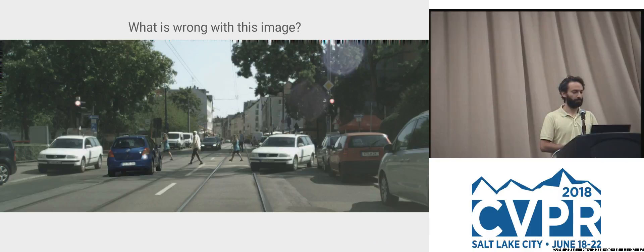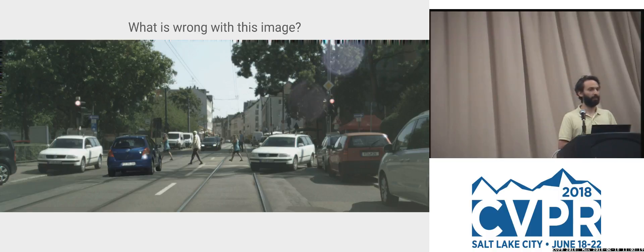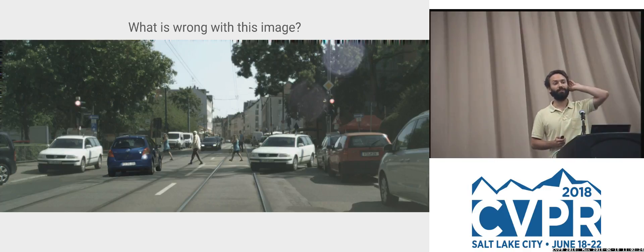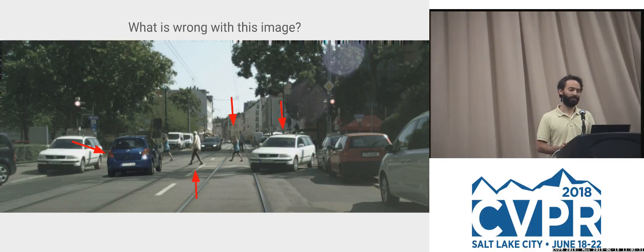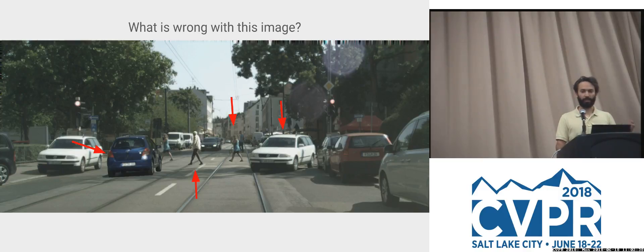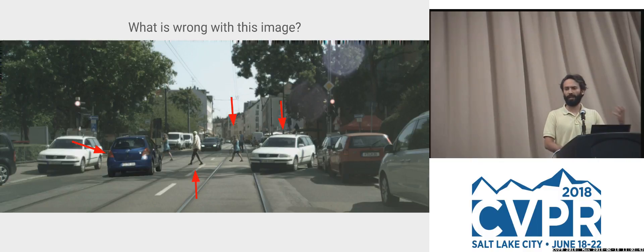Can someone spot something off with this image? — Yes, exactly: a car duplicated, going in the wrong direction, but it takes a while to notice. So this is a scenario where if the network learned to extract objects and recompose them, you could use the supervision signal 'does this look like a natural scene or not?' That's one way to supervise this task.